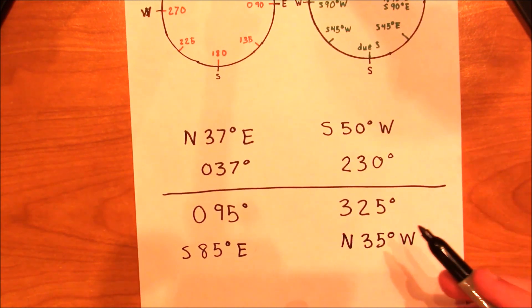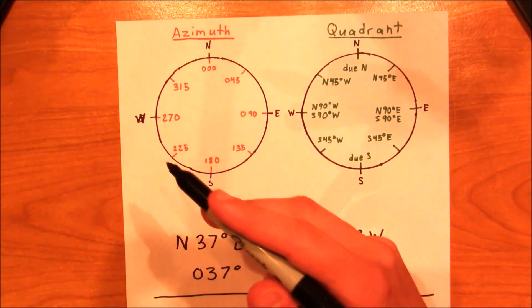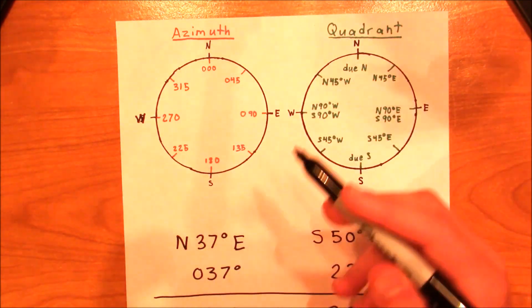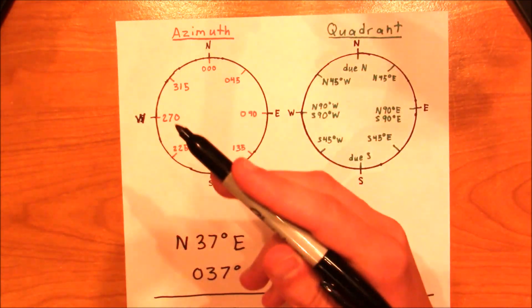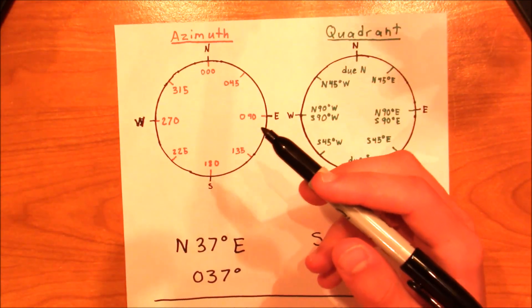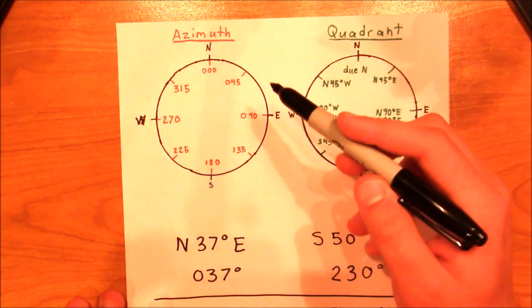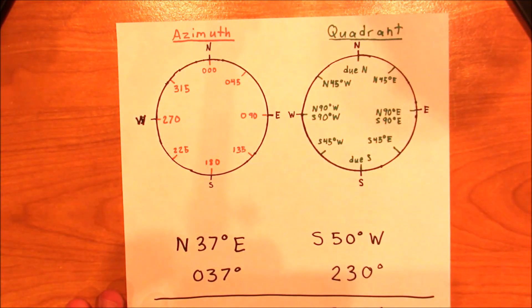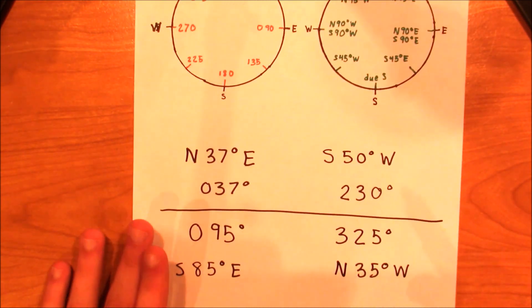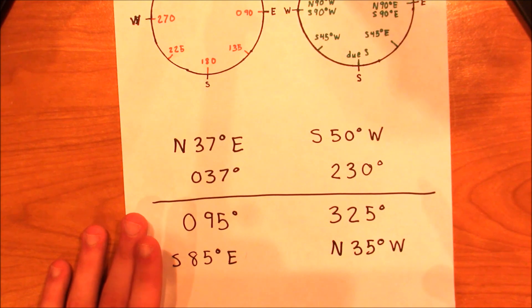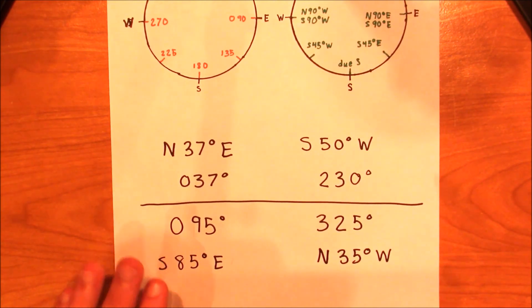If you didn't get these, go ahead and take a look at the two compasses again and try to figure out where your mistake was. If you need to, rewind the video and work through it again. But as long as you got this down, you've got the basic idea behind the compass. So let's go ahead and move on to the next part.